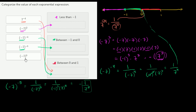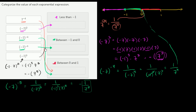Finally, negative 7 to the 5th power. We can view that as negative 1 times 7 to the 5th power, which is the same as negative 1 to the 5th times 7 to the 5th, giving negative 7 to the 5th. Since 7 to the 5th is a very large number — greater than 1 — the negative of that is a very negative number, less than negative 1.